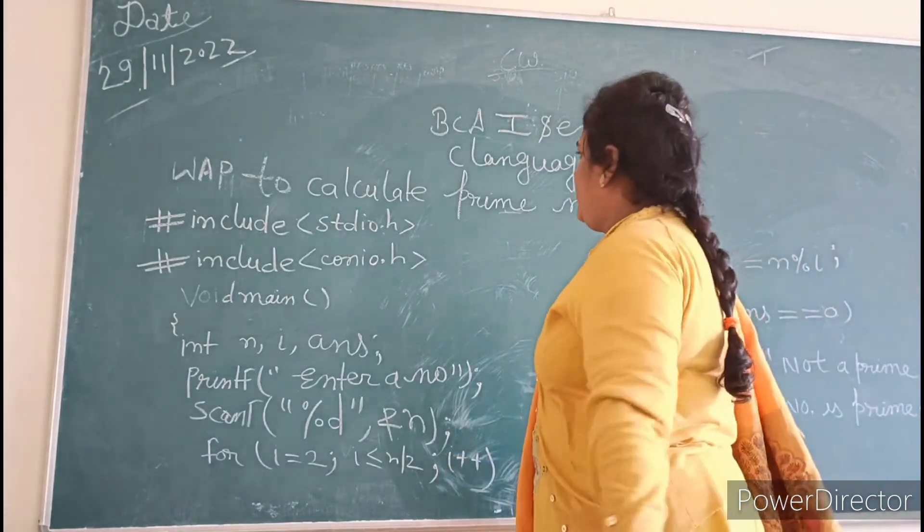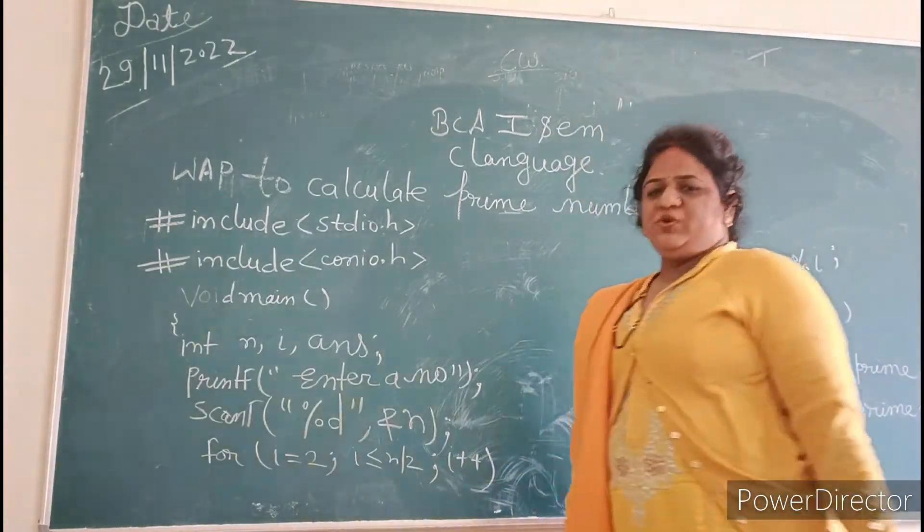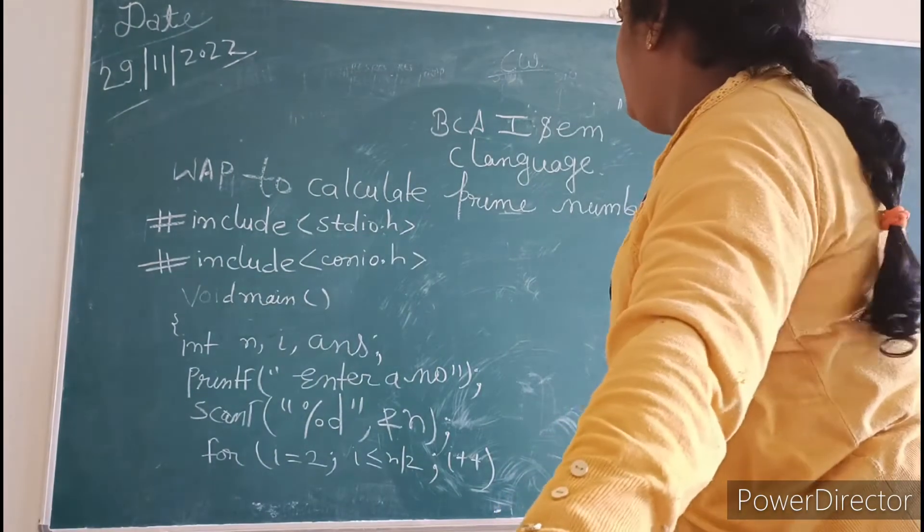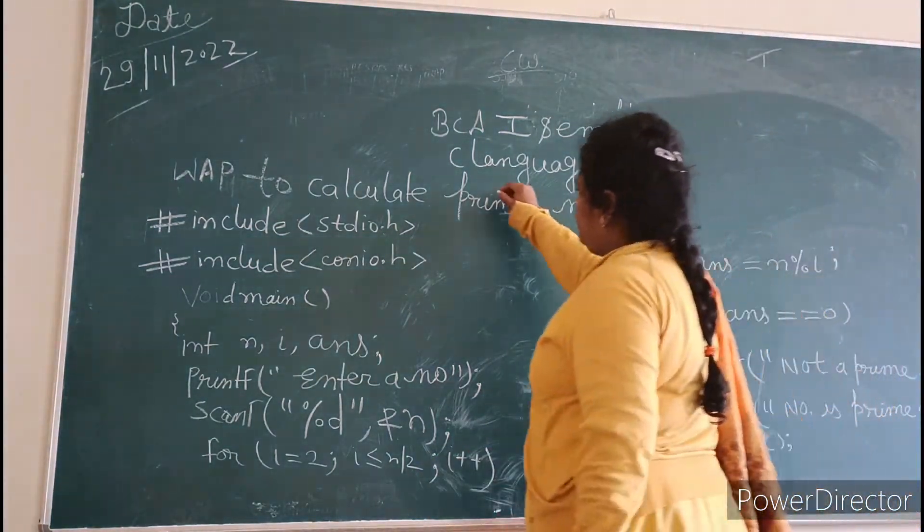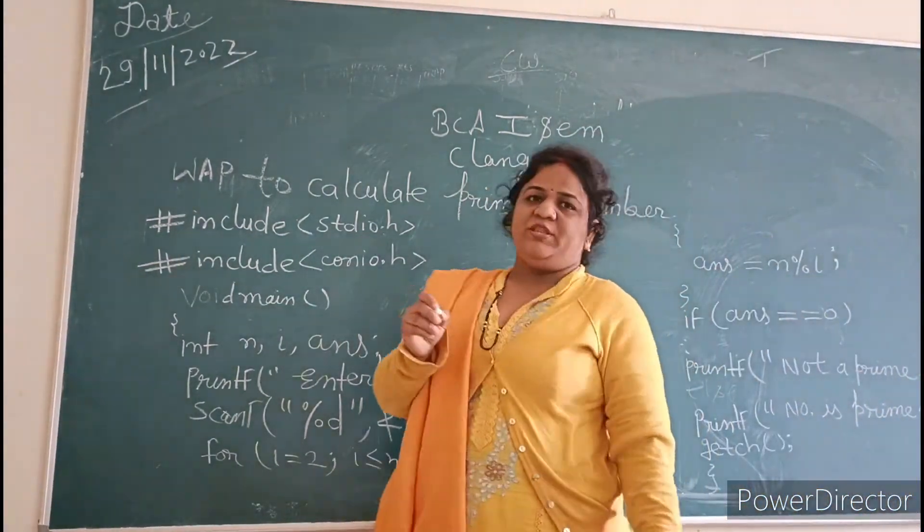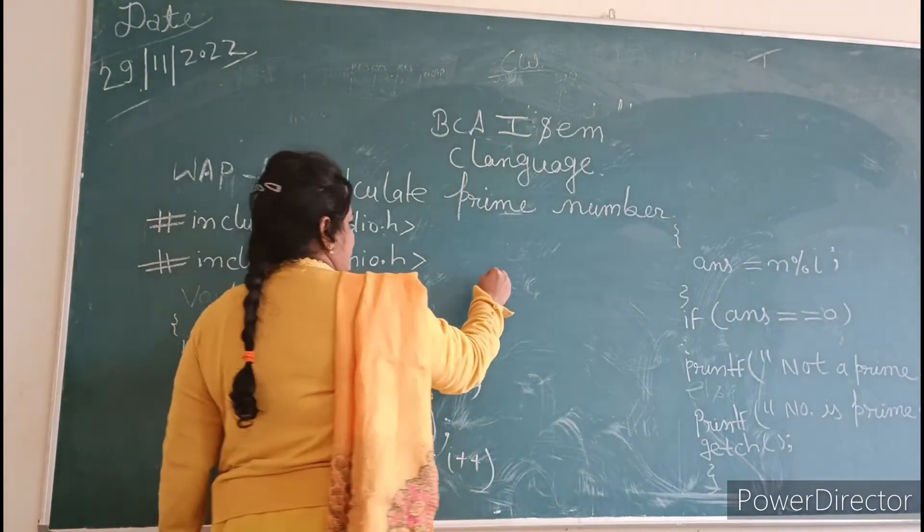BC 1st is the program to calculate prime number. Prime number is one, you know, prime number is one.